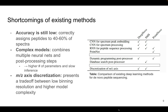Additionally, most of these models rely on some form of m/z-axis discretization to provide input vectors for the machine learning models, and this vectorization process usually presents a trade-off between low binning resolution on one hand and higher model complexity on the other.